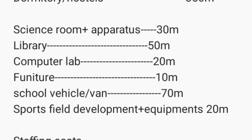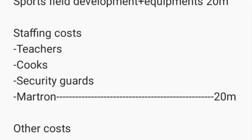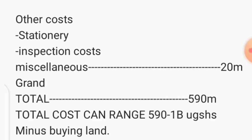Staffing costs — including teachers, cooks, security, and matrons — are roughly budgeted at 20 million on a tight budget. Other costs such as stationery, inspection costs, and miscellaneous expenses amount to roughly another 20 million. So the total budget comes to approximately 590 million Ugandan shillings, and can range from 590 million to a billion shillings depending on the type of school, location, and what you put in it.